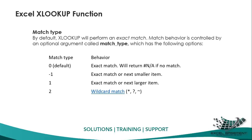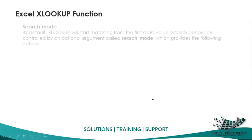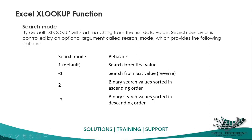To summarize the match types: zero by default is exact match and returns N/A if no match found; minus one goes for exact match or next smaller item; positive one goes for exact match or next larger item; and two is for wildcards. For search mode: positive one finds the first value, minus one does reverse search, two is binary search ascending, and minus two is binary search descending.